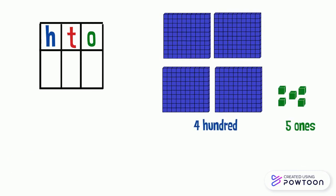Four hundreds and five ones represent the number 405. Four blocks of 100 equals 400. Five ones equals 5. So the expanded form of the number 405 is 400 plus 5.